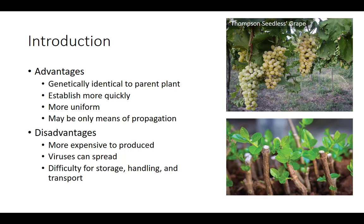The number one disadvantage is that typically producing plants vegetatively is more expensive than using seeds. A second problem occurs when plant material becomes infected with a virus that spreads systemically throughout the plant, and thus can be transmitted to other plants. Viral infections can be minimized or eliminated by starting with disease-free seedlings and maintaining virus-free stock plants for asexual propagation. Other disadvantages include difficulty with storage, handling, and transport of asexual materials, which are more cumbersome to handle than seeds.